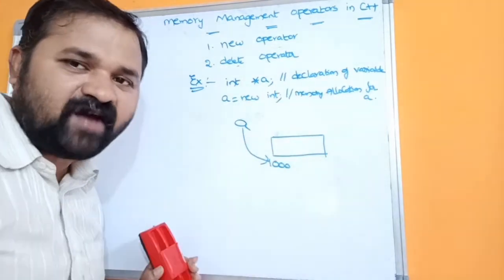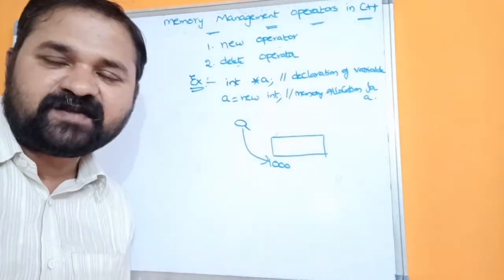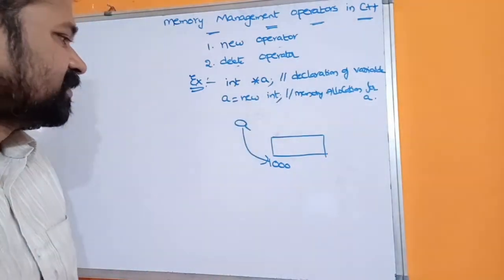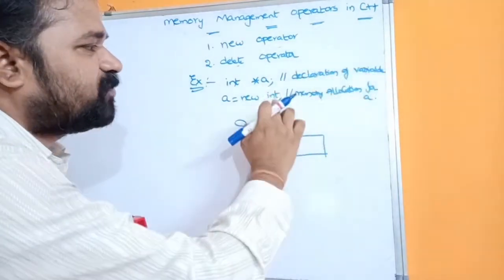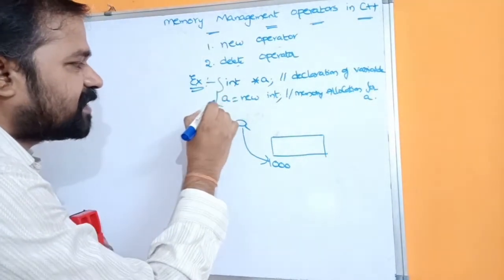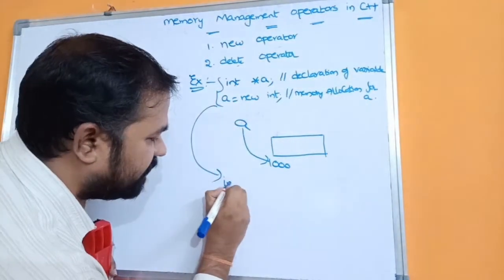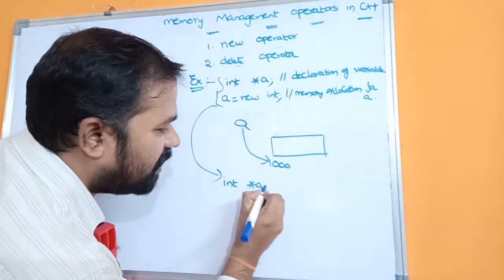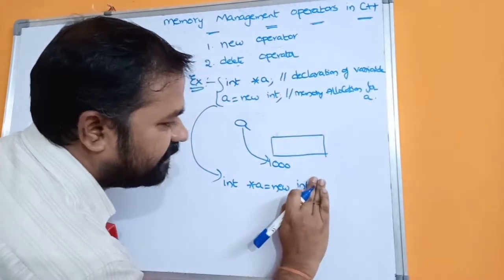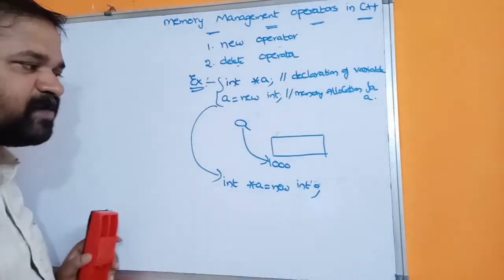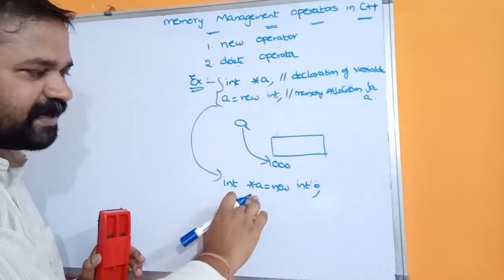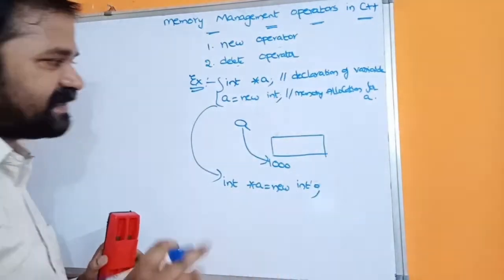Here we have only one variable. If we have arrays, then we have multiple elements and a will point to the starting address of the array. We can combine the two statements into a single statement: int *a = new int. Whenever this statement is executed, then declaration as well as memory allocation will be performed in a single statement.